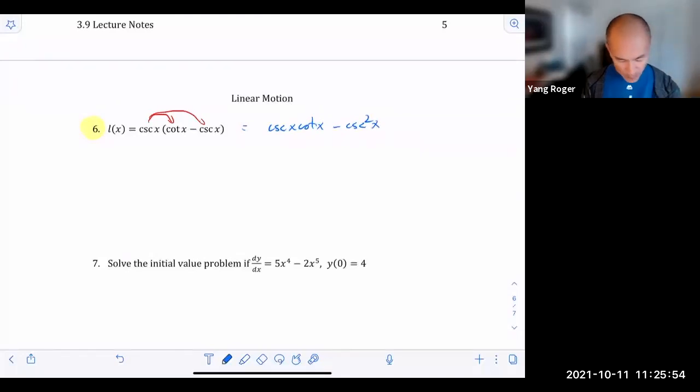So if I wanted to find the antiderivative, which is called capital L of x. The antiderivative of cosecant x cotangent x is negative cosecant x. And the antiderivative of negative cosecant squared x is plus cotangent x. And then because the antiderivative is a whole family of functions, we're going to get plus c. So this is the antiderivative that we're looking for.